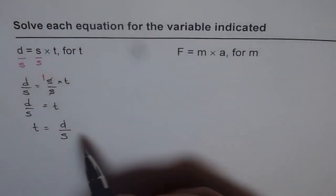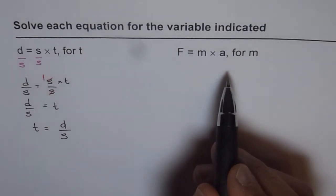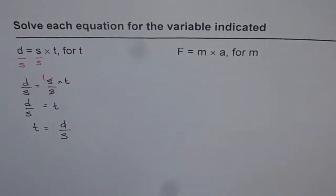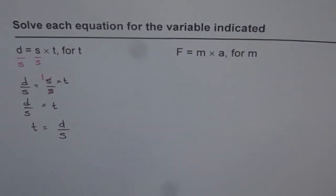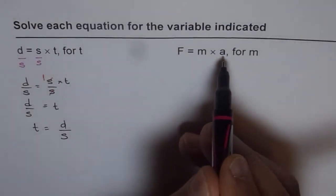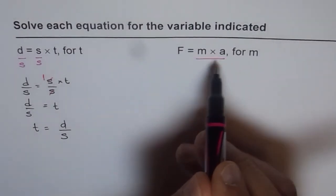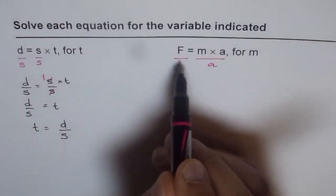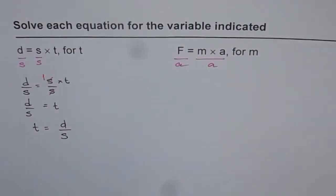Now this is very similar. So we'll follow exactly the same procedure. The first step will be we need to isolate for m. Since we need to isolate for m, we will divide by a both sides. So we'll divide by a on this side and we'll divide by a on this side also. So what do we get?